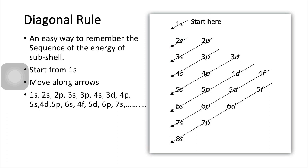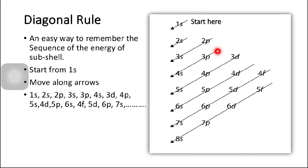It is difficult to memorize the increasing order of energy of sub-shells, but the diagonal rule provides an easy way to remember the sequence. We start from 1S and move along the arrows: first 1S, then 2S, then 2P, then 3S, continuing along diagonals to get 3P, 4S, 3D, 4P, 5S, and so on.